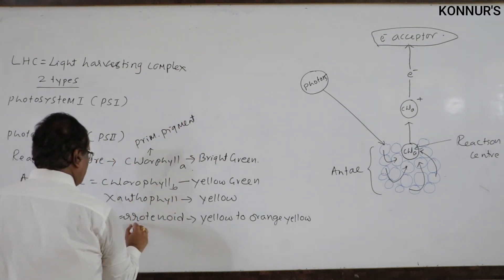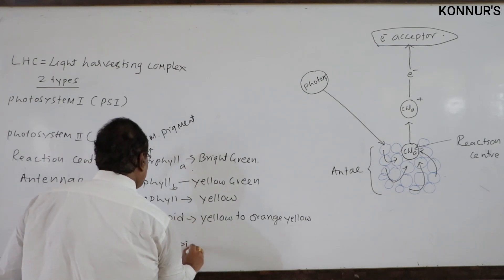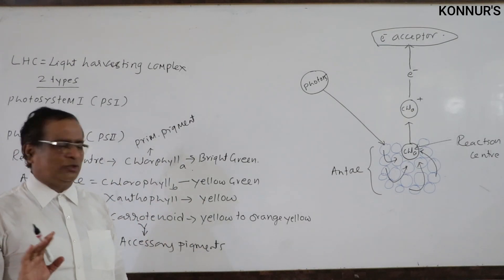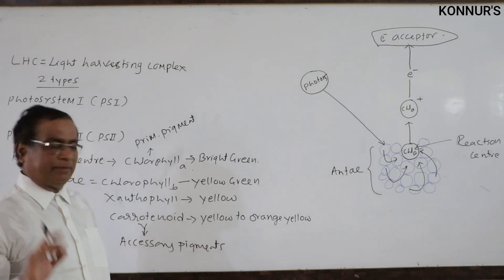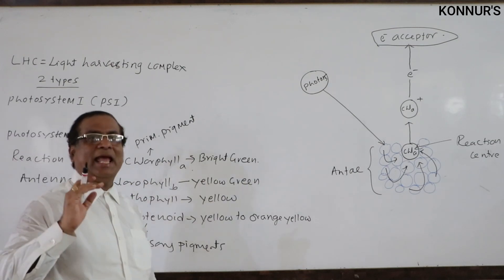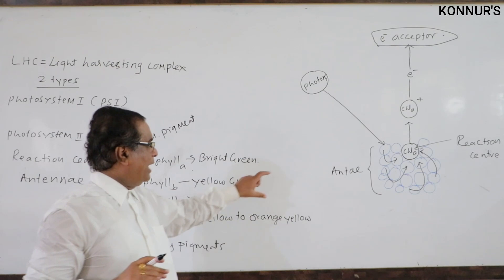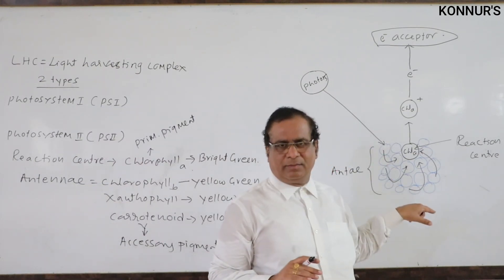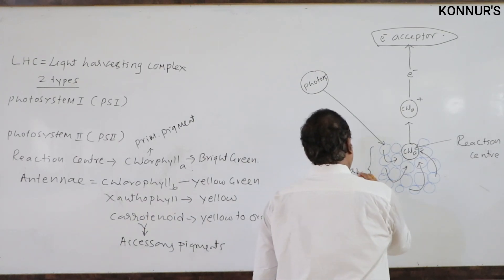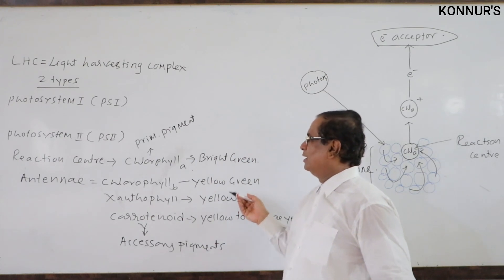The remaining three pigments in the antennae are named accessory pigments because they are capable of trapping radiant energy only — they cannot convert radiant energy into chemical energy. Chlorophyll a is the primary or essential pigment because it can both trap radiant energy of the sun and convert it into chemical energy. This is the light harvesting center, which includes the reaction center having chlorophyll a and the antennae consisting of accessory pigments.